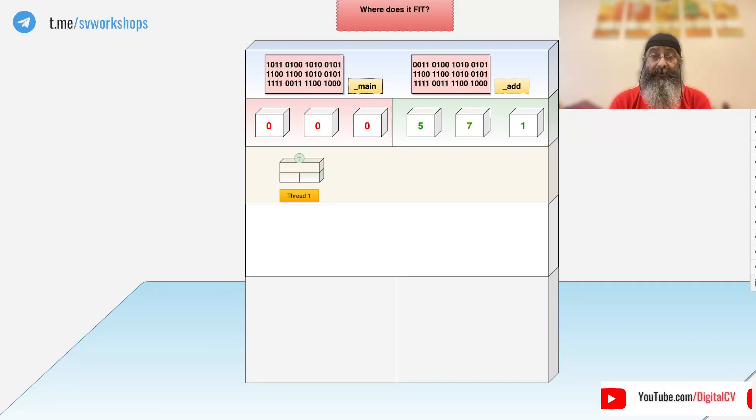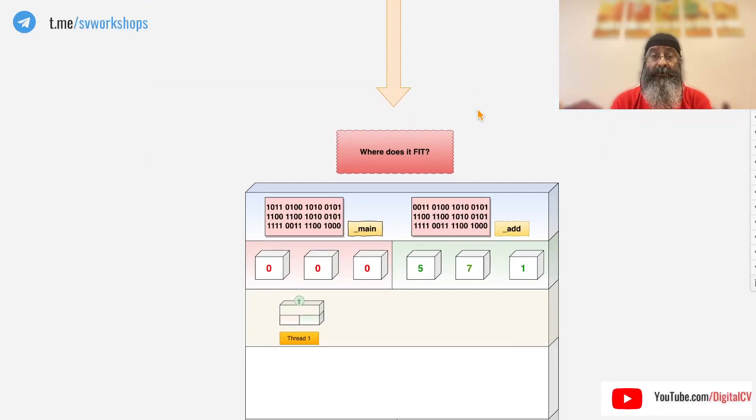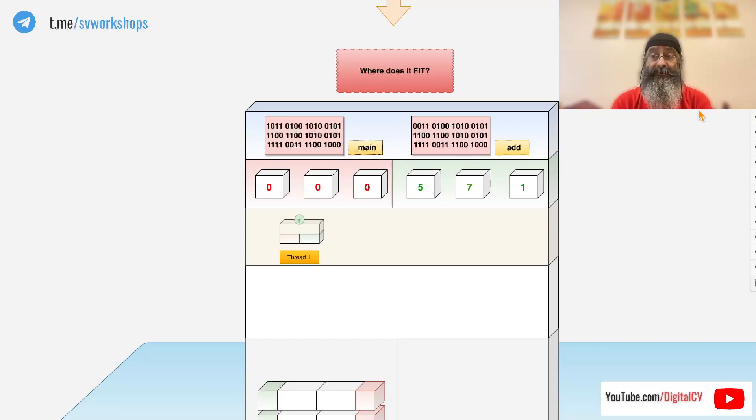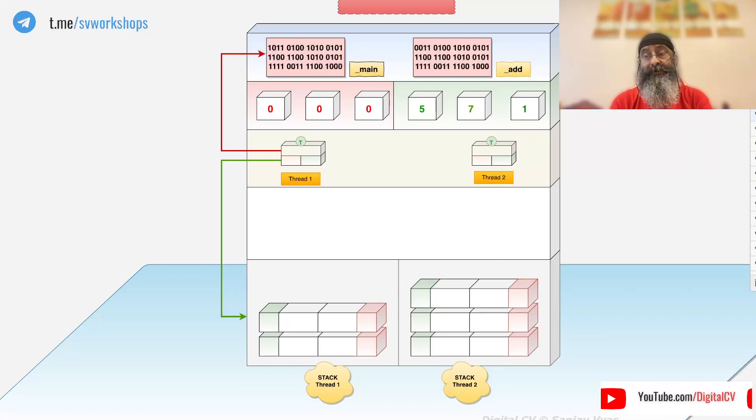So when a thread is created in the process or for the process, it has three things: instruction pointer, stack pointer, and CPU register. The thread must know where it's going to process next and it should also know where its stack is. So this thread knows where it's executing in main and it has a dedicated call stack for itself. Now, if you were to run another thread, this thread would not only know its instruction pointer, but it will also have its own call stack. This is very important for multi-threaded point of view and languages which do not provide this cannot be multi-threaded.